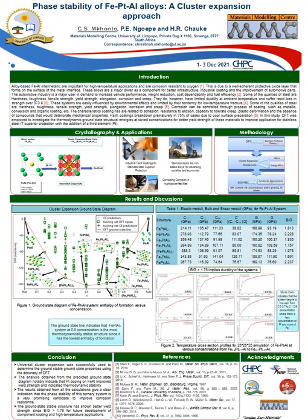We conclude that the cluster expansion was successfully used to determine the ground state properties using the accuracy of DFT. The analysis clearly indicates that platinum doping on the iron aluminide improved the yield strength, indicating thermodynamic stability of the material. The calculations also show that the feasibility of this ternary system is a promising candidate to improve corrosion resistance, and since the bulk-to-shear modulus is greater than 1.75, these materials are promising for future development of component coating and high-temperature applications.